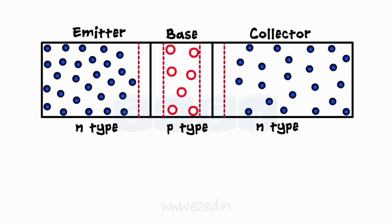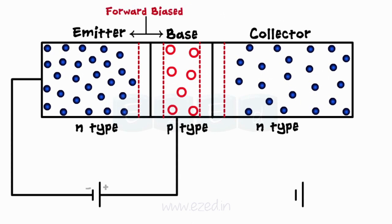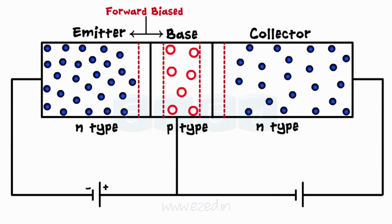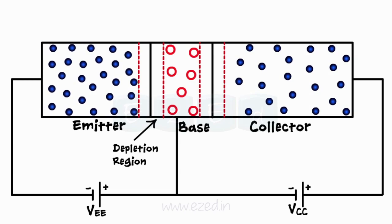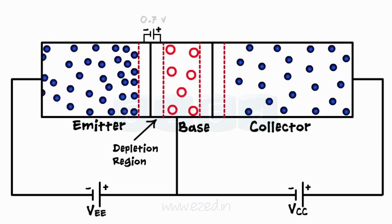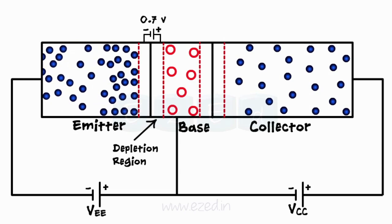Let's understand the working of the NPN transistor. We connect two DC sources such that the base-to-emitter junction is forward biased and the collector-to-base junction is reverse biased. The source connected to the base-to-emitter junction is called VEE and the one connected to the collector-to-base junction is called VCC. When we apply the negative terminal of the DC source to the emitter, electrons from the emitter move towards the base. Being a PN junction, it forms a junction potential of 0.6 to 0.7 volts.